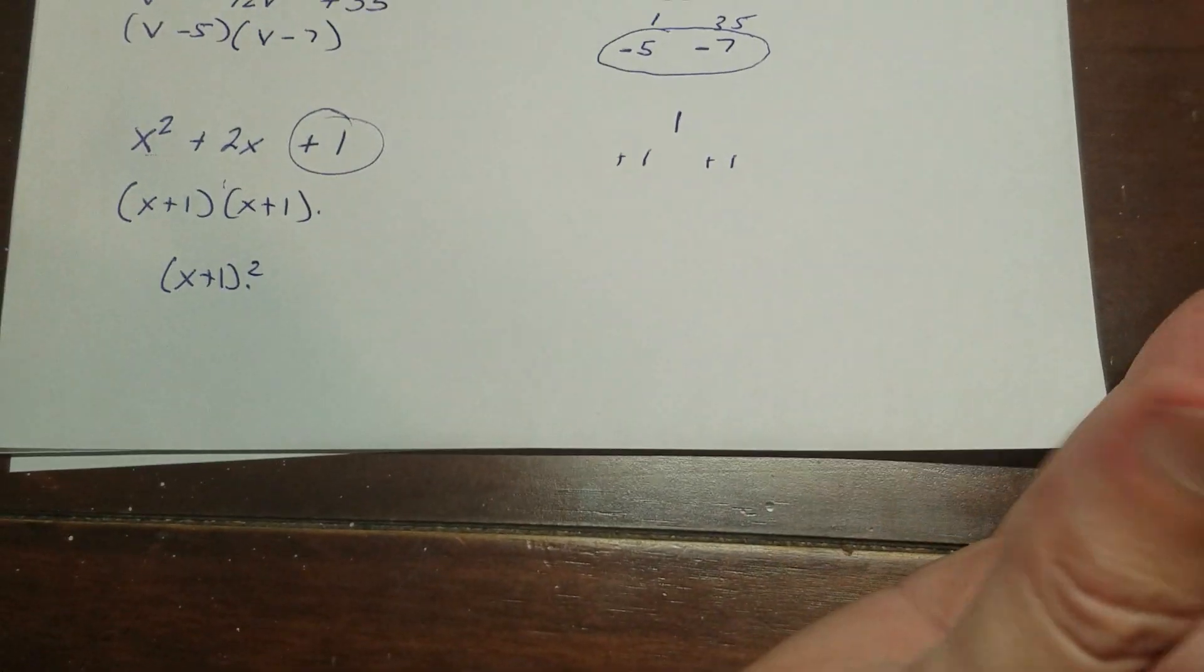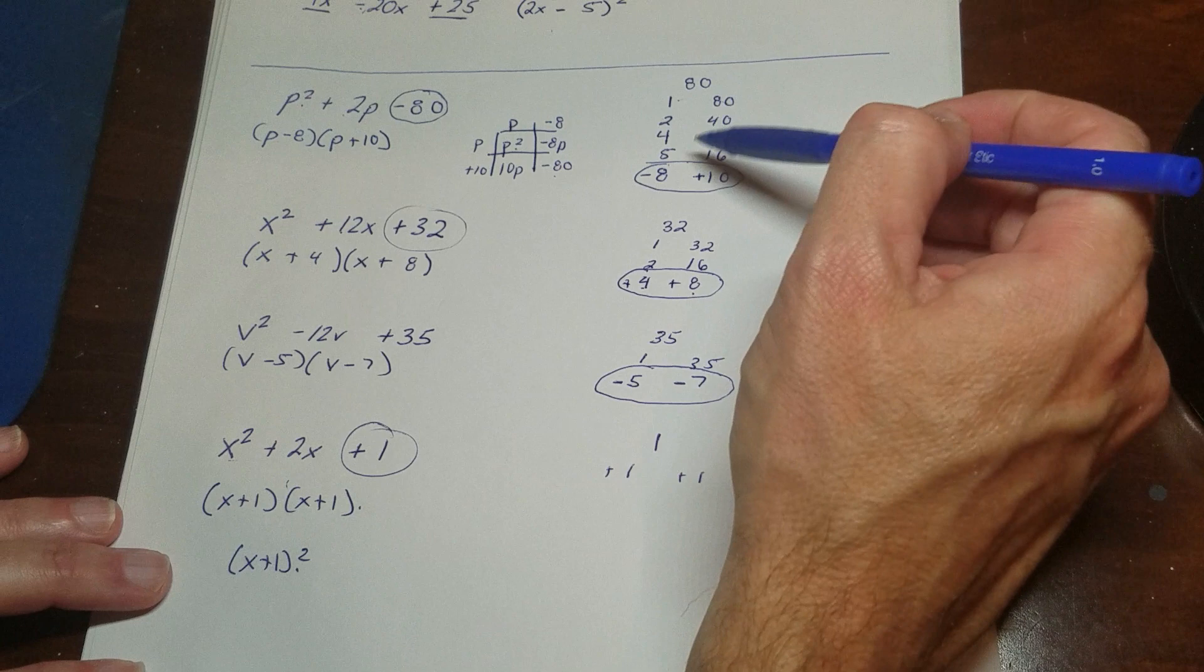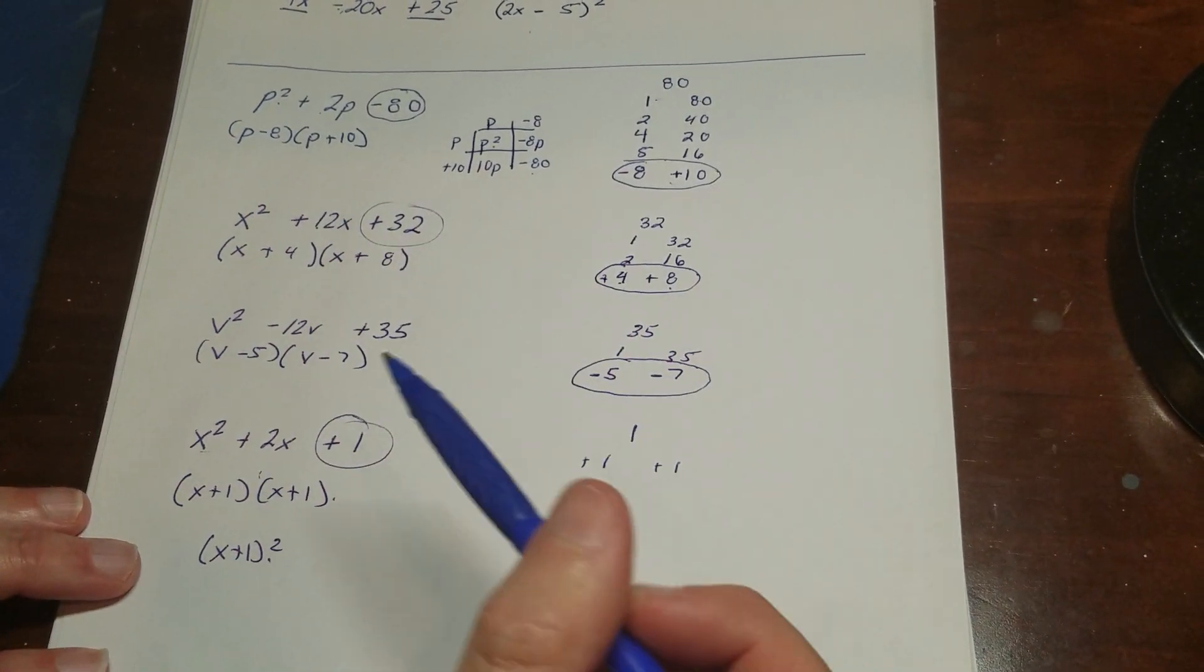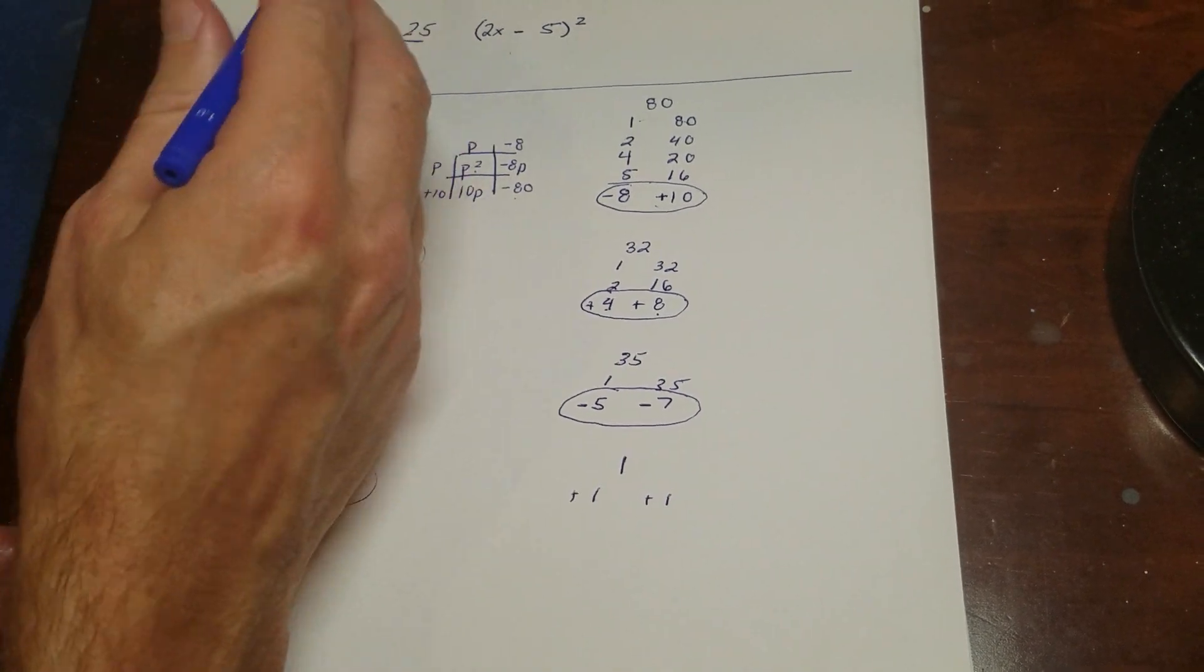But that's it. That's all there is to it. So you come up with the factors. You find a pair that adds to the middle number. And then you write your binomials out. So that's how you do simple factoring.